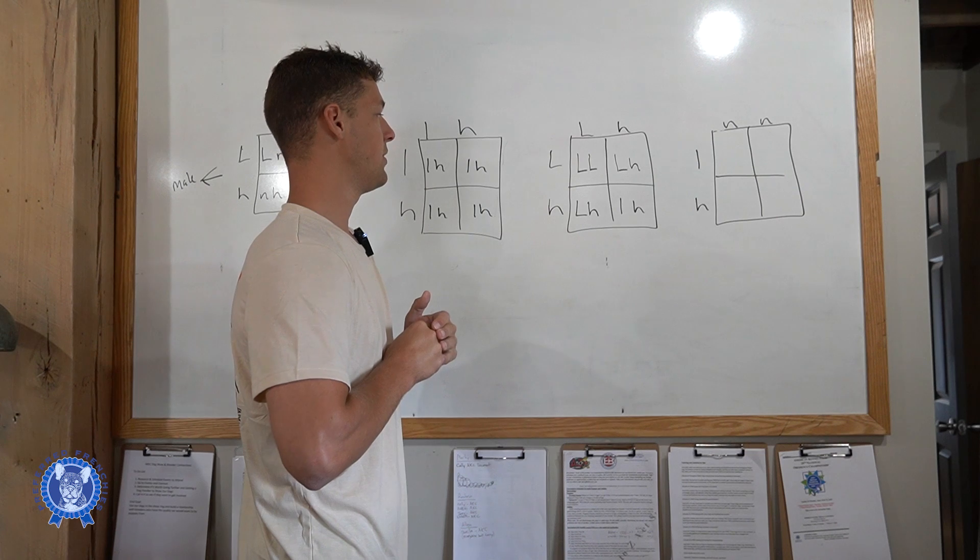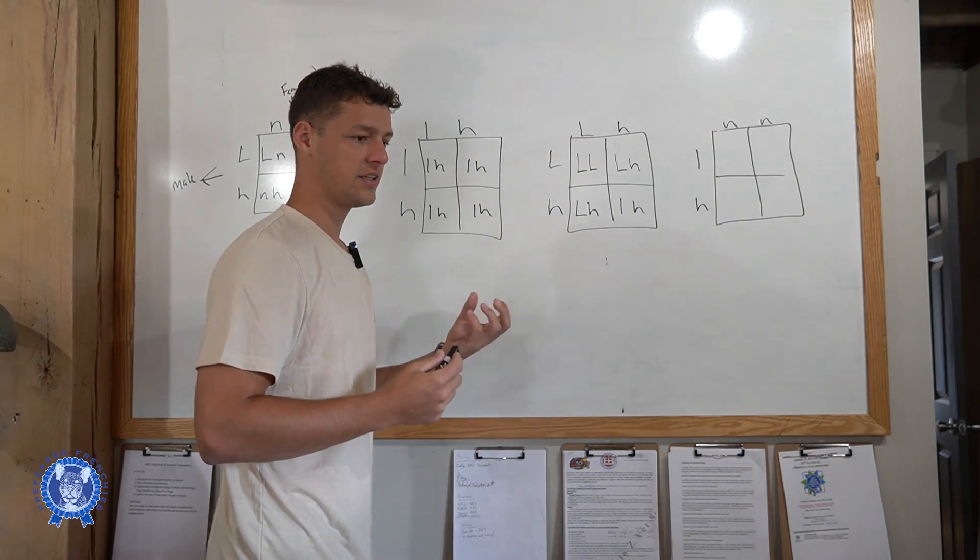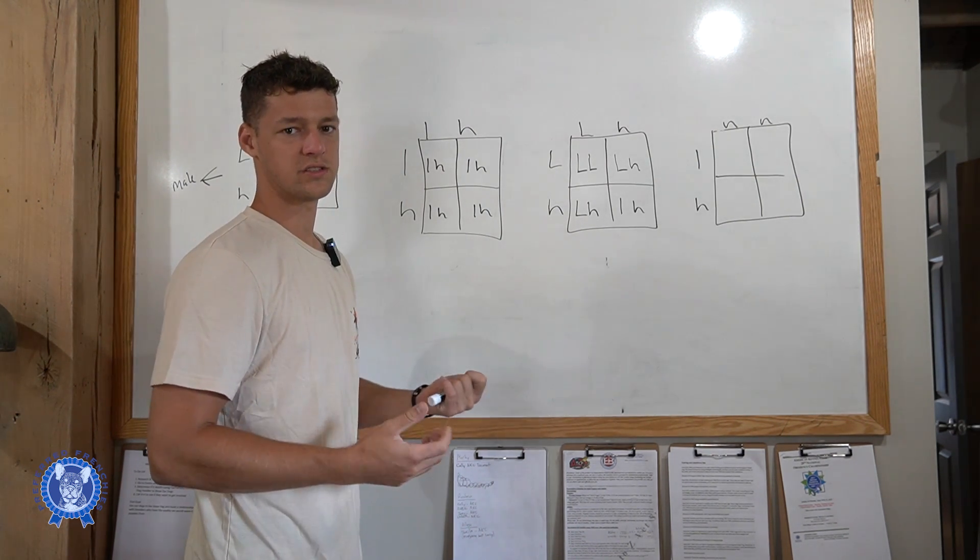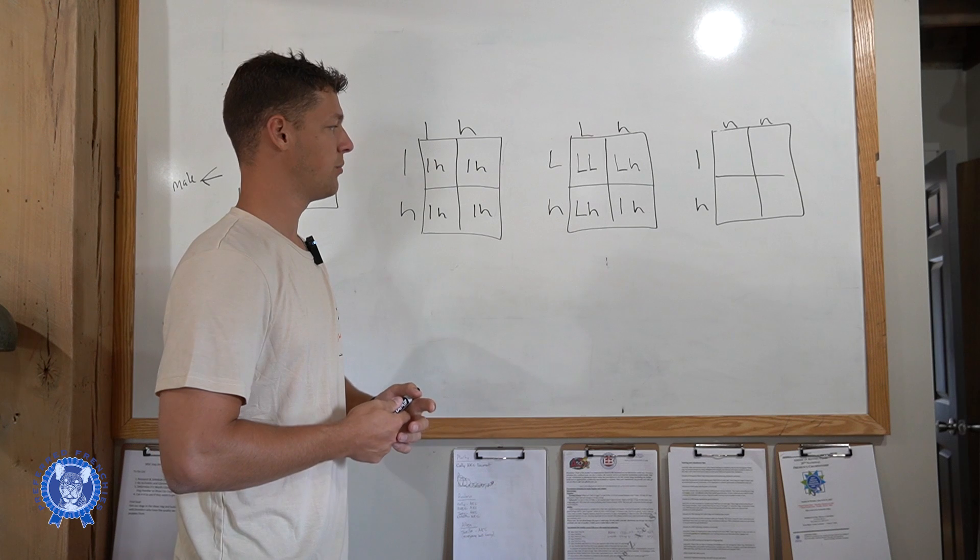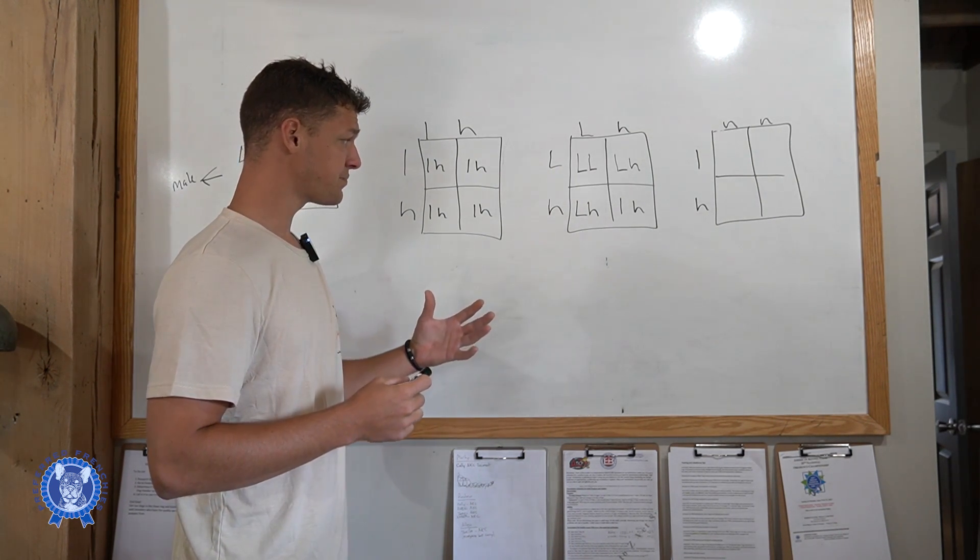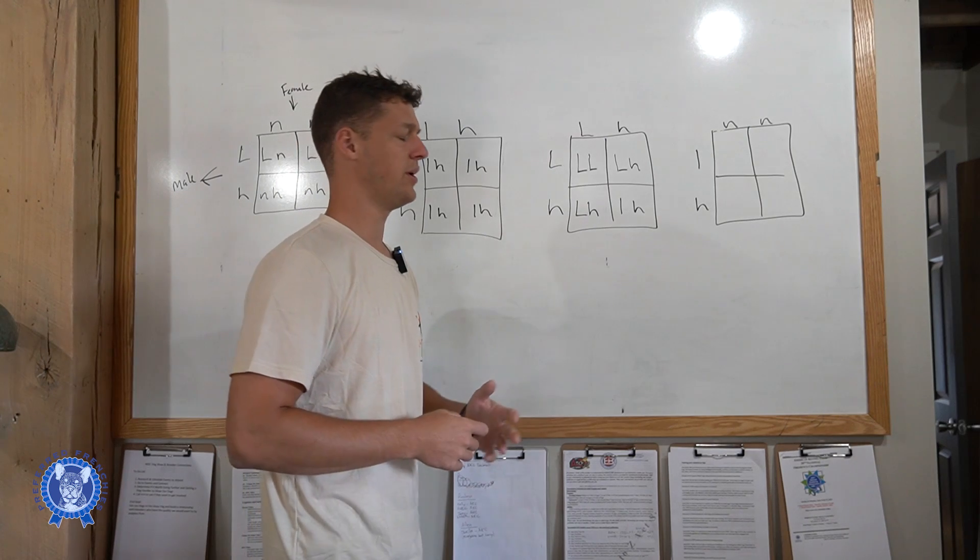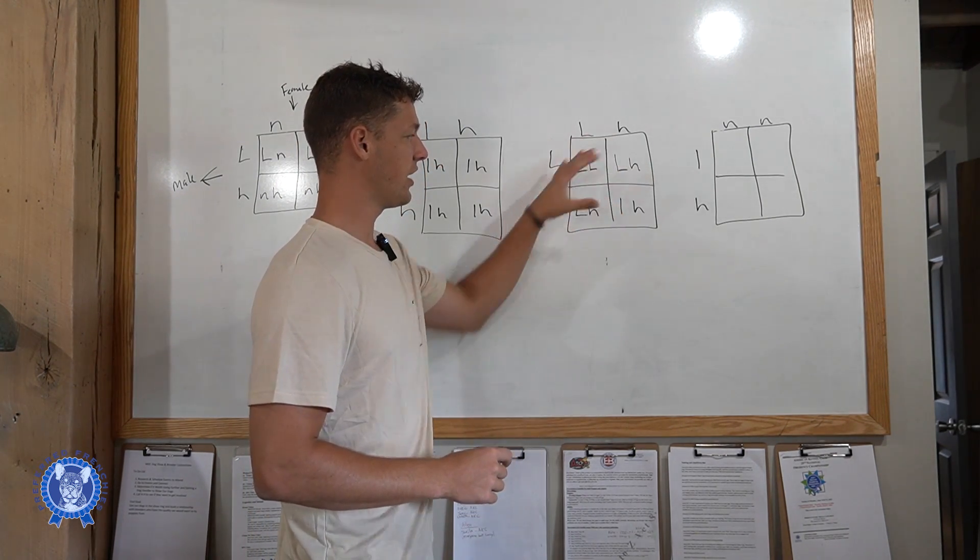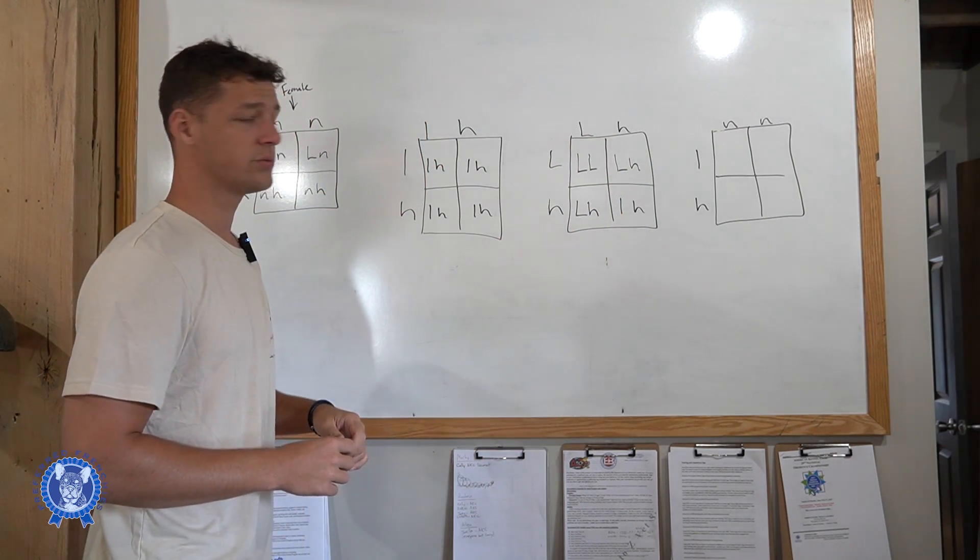So in a litter of four, that's potentially what it could look like. You might have one full fluffy pup, and you'd typically at a young age you'll still need to do testing just to make sure. Sometimes it can be a little bit deceiving when you're having puppies, but most times you can get a good feel around two weeks if they're fluffy or not.